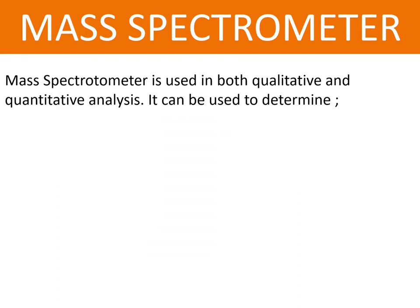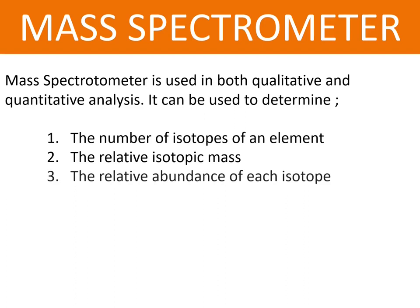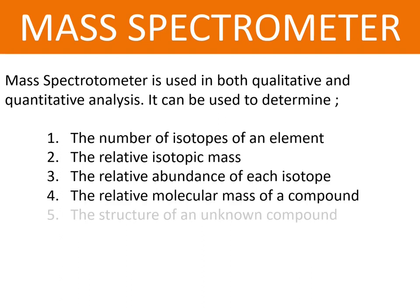A mass spectrometer is used in both qualitative and quantitative analysis. It can be used to determine the number of isotopes of an element, the relative isotopic mass, the relative abundance of each isotope, and the relative molecular mass of a compound.